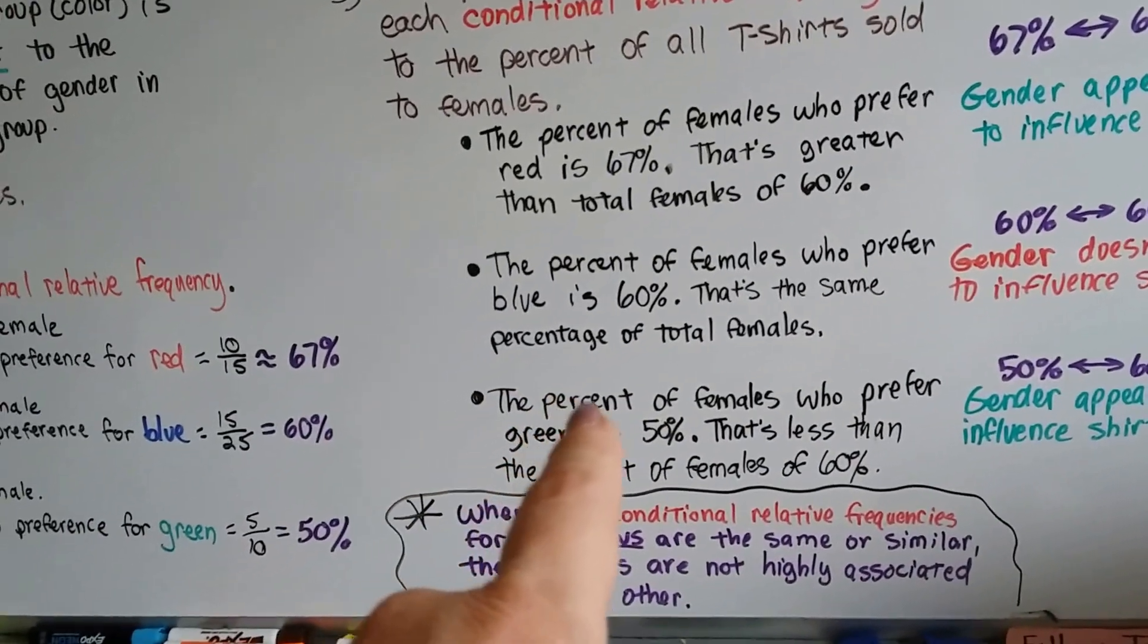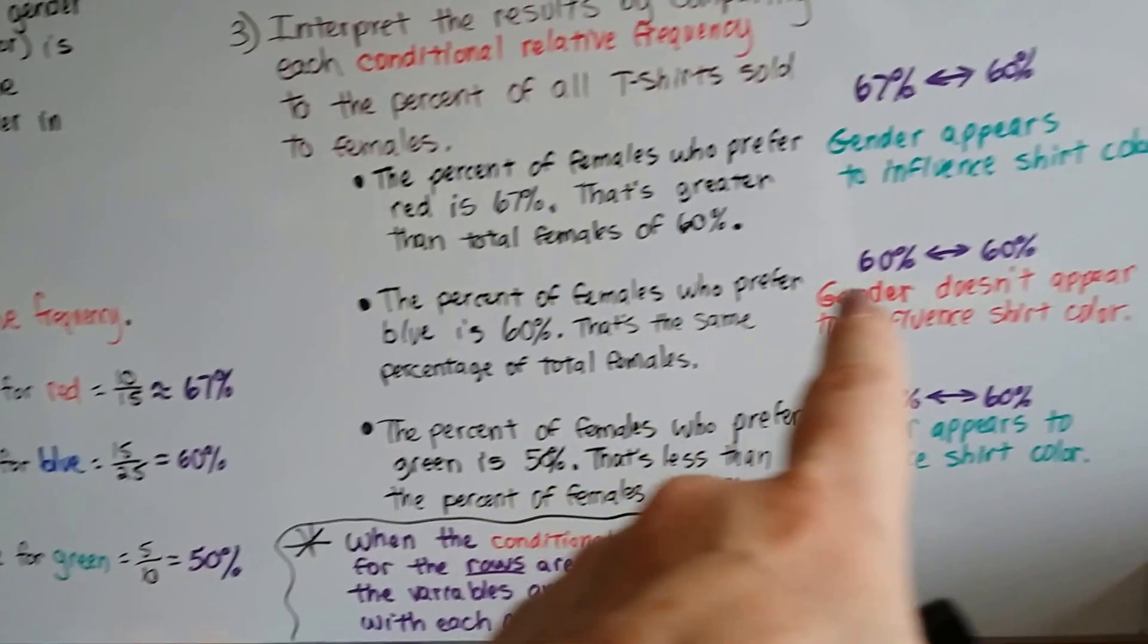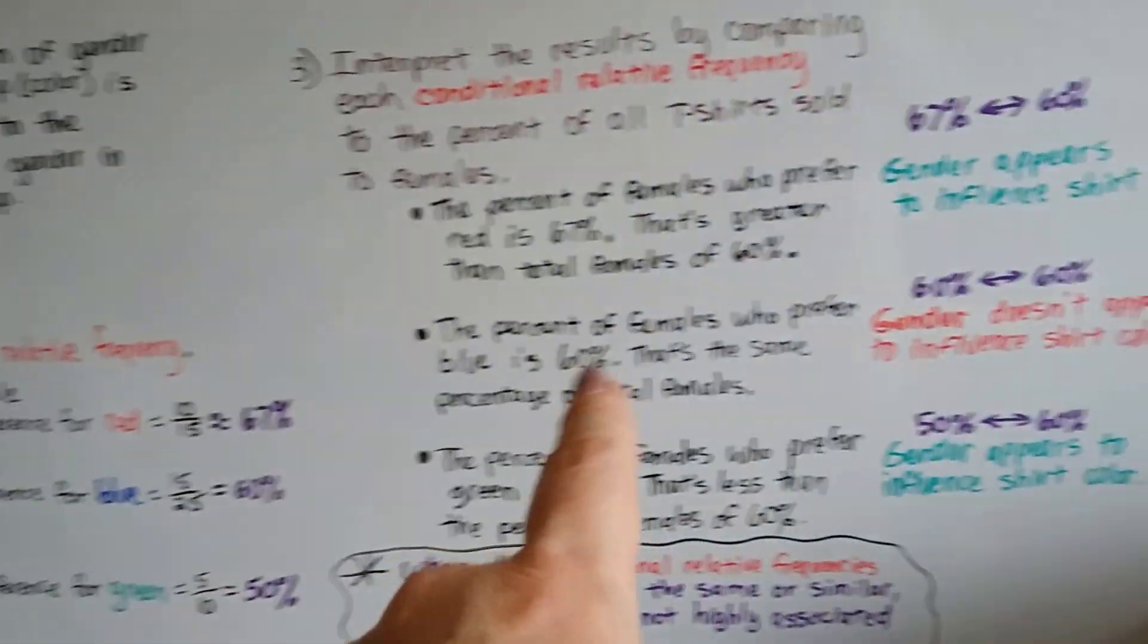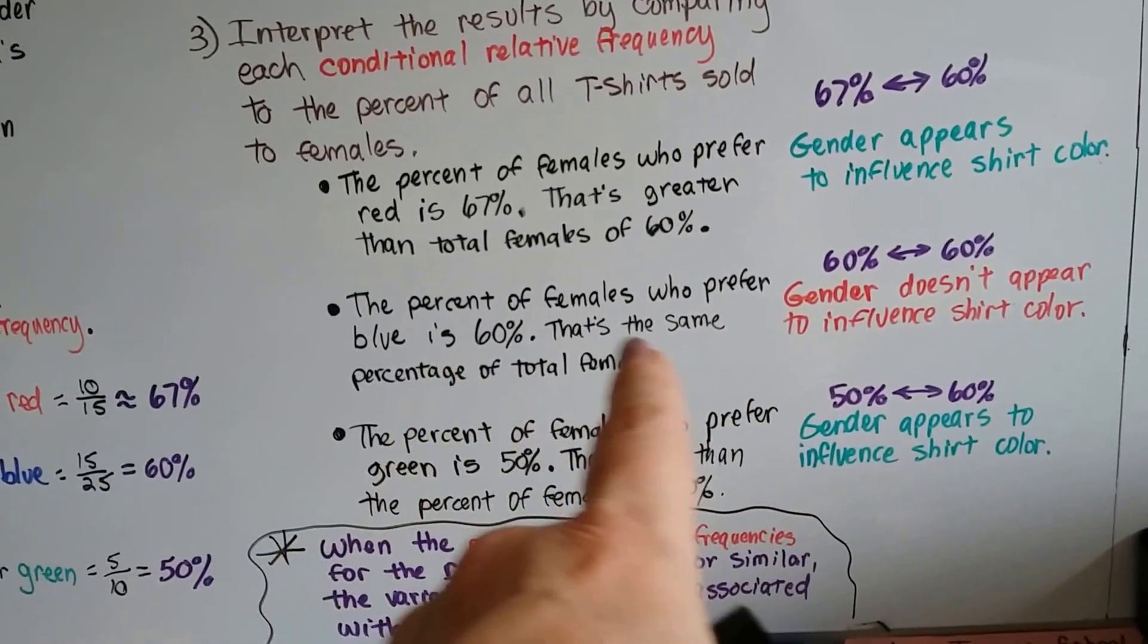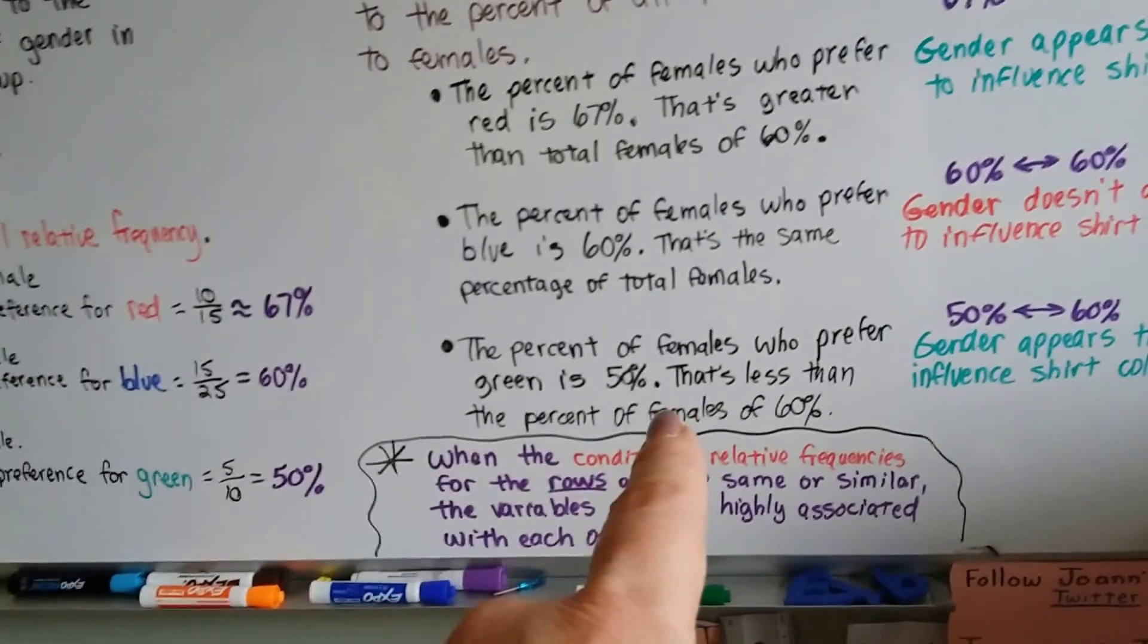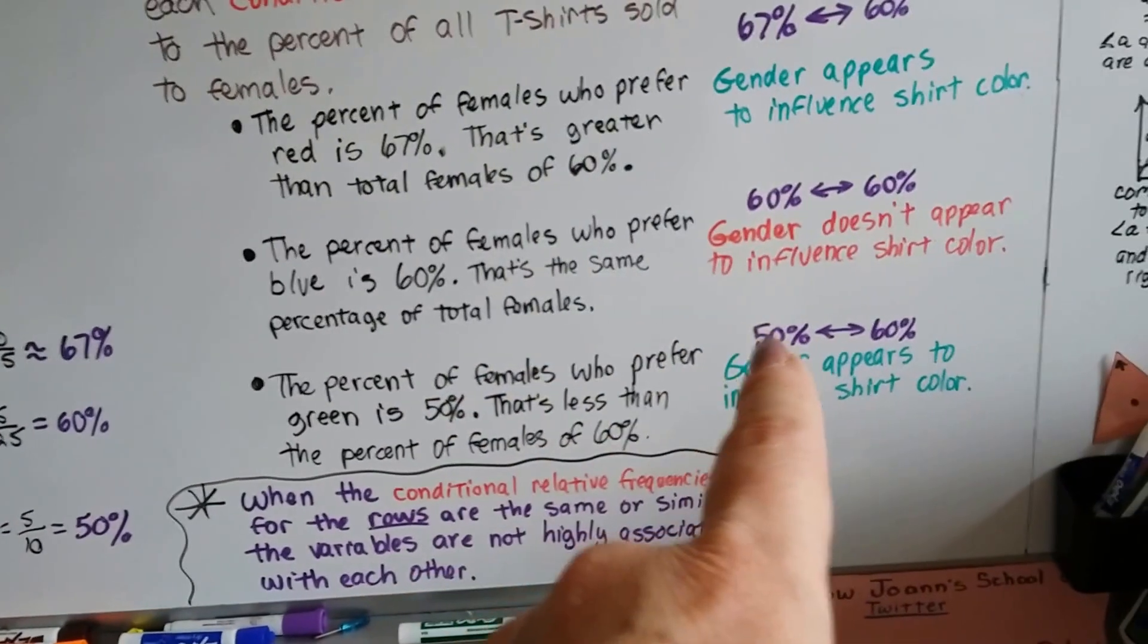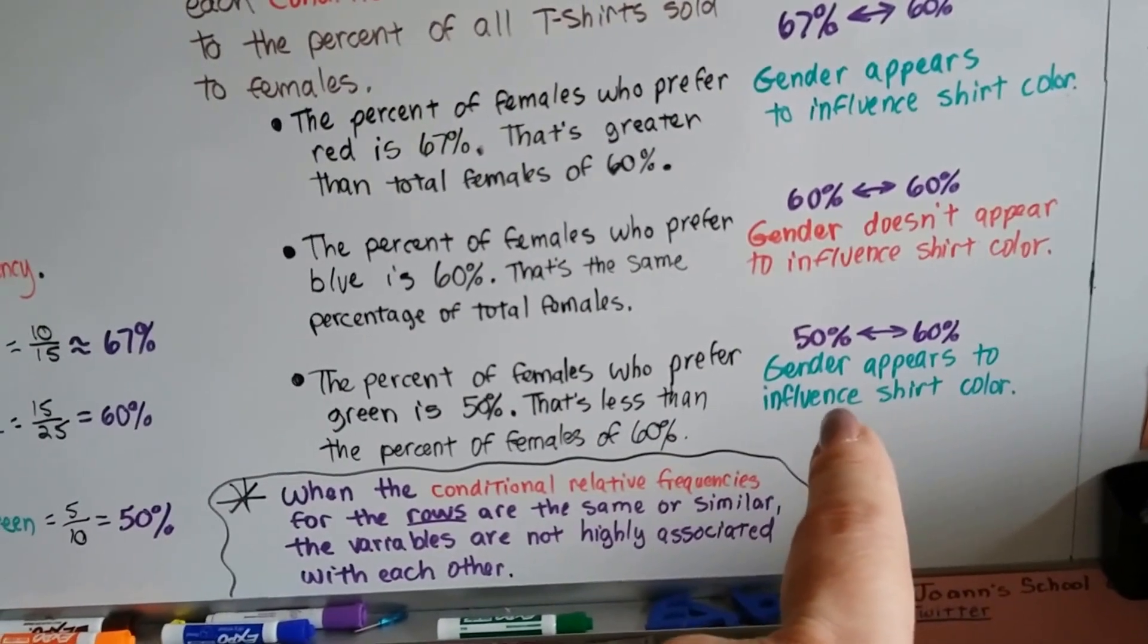The percent of females who prefer blue is 60%. And that's about the same. That's 60%, that's what the percentage of females are. So that gender doesn't appear to influence the shirt color for blue. And the percent of females who prefer green is 50%. And that's less than the percent of females of 60%, 50% compared to 60%. So the gender did appear to influence the shirt color.